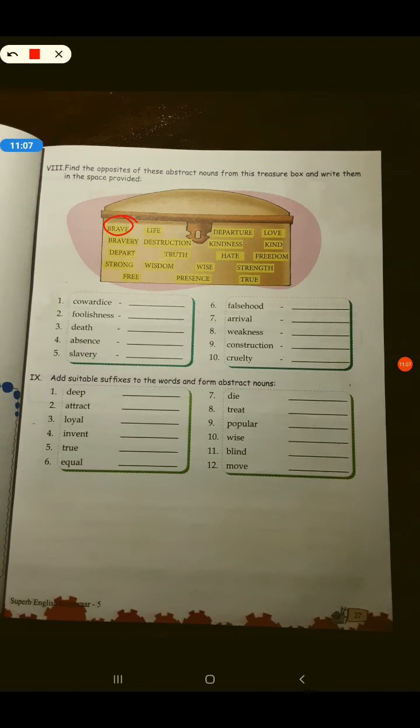Find the opposite of these abstract nouns from the treasure box and write them in the space provided. Do questions hai, question number eight and nine. Cowardice, bravery. Yahan par aapko iska opposite word use karna hai. Cowardice ka ho jayega bravery. Falsehood ka ho jayega truth. Slavery ka hoga freedom.